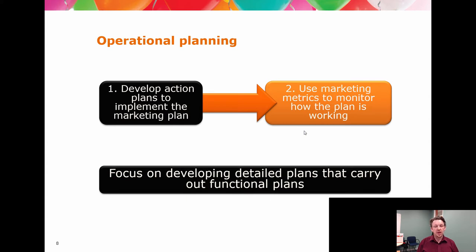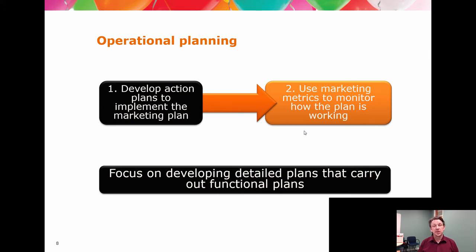Once we've set the direction, objectives and strategies, we then have implementation — operational planning — where we go from statements of 5% growth to specifics like: on Thursday at 3 p.m. there will be an advert run on the following radio stations, the outcome of which should be a spike of traffic to our website at 3:05 to 3:15, and a 1 to 2% uptick in the shopping cart at 3:10, 3:15 and 3:20. We're looking at that level of specificity — times and places.